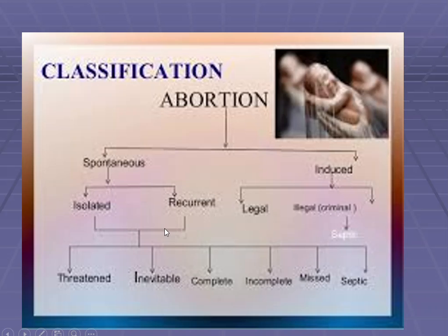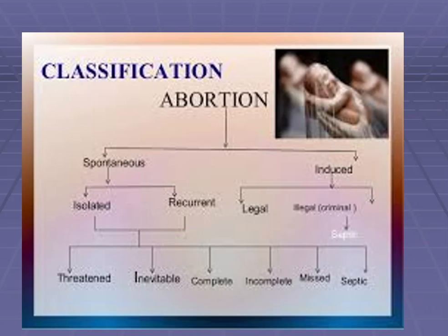Under the isolated and recurrent types, there are six further types. First is threatened — the only type where continuation of pregnancy is possible. Second is inevitable — the process of abortion has started and cannot continue. Third is complete — products of conception are completely out. Fourth is incomplete — products are partially out. Fifth is missed — the fetus has died but is still inside the uterine cavity. And sixth is septic — any abortion associated with infection.